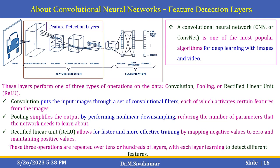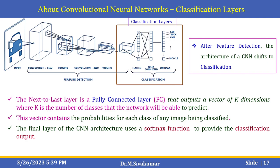After feature detection, the CNN architecture shifts to classification layers. The fully connected layer outputs a vector of K dimensions, where K is the number of classes the network can predict. This vector contains probabilities for each class for any input image. For example, a car image input may be classified as car, truck, or van. The final layer uses a softmax function to provide the classification output.